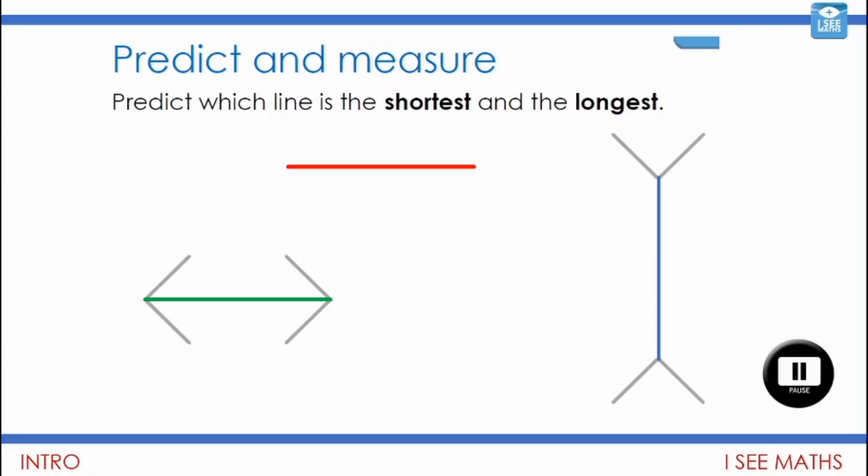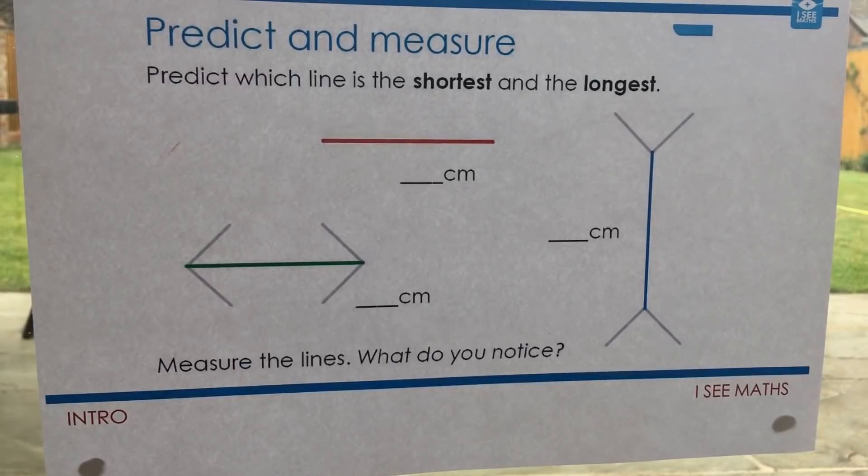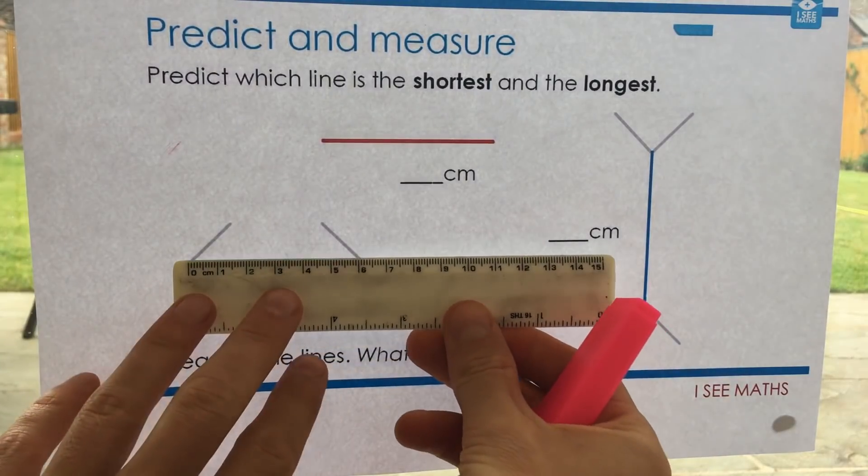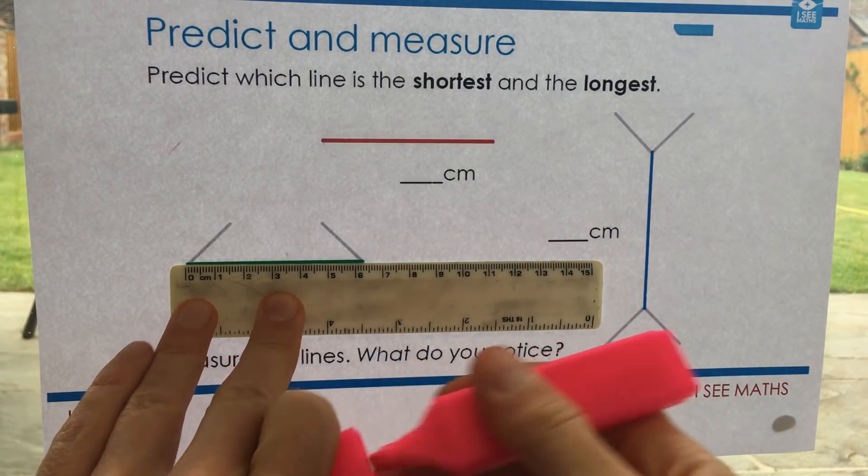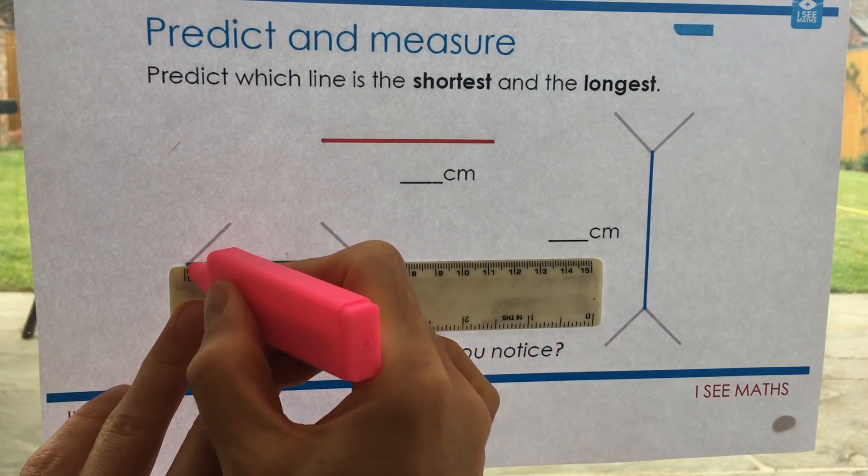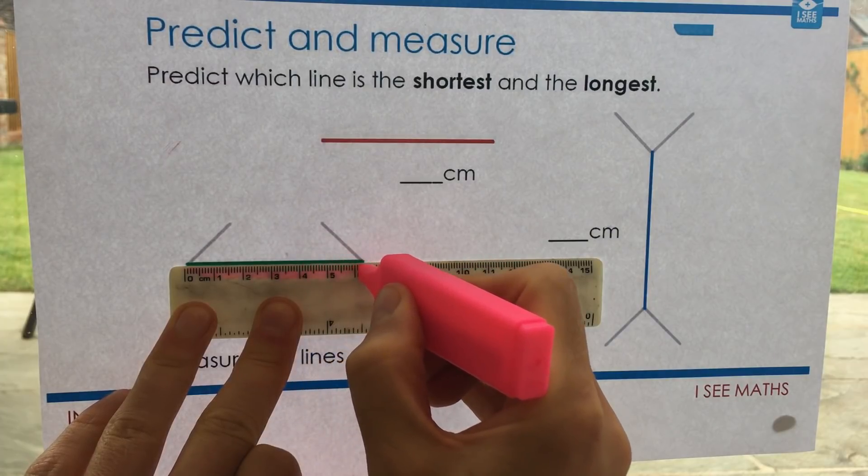I hope you've predicted which line you thought was the shortest and which was the longest. Time to measure and see. That one I think is 6.3 centimeters. I'm going to draw a pink line, you might just be able to see it on my ruler. That's how long the green line is.